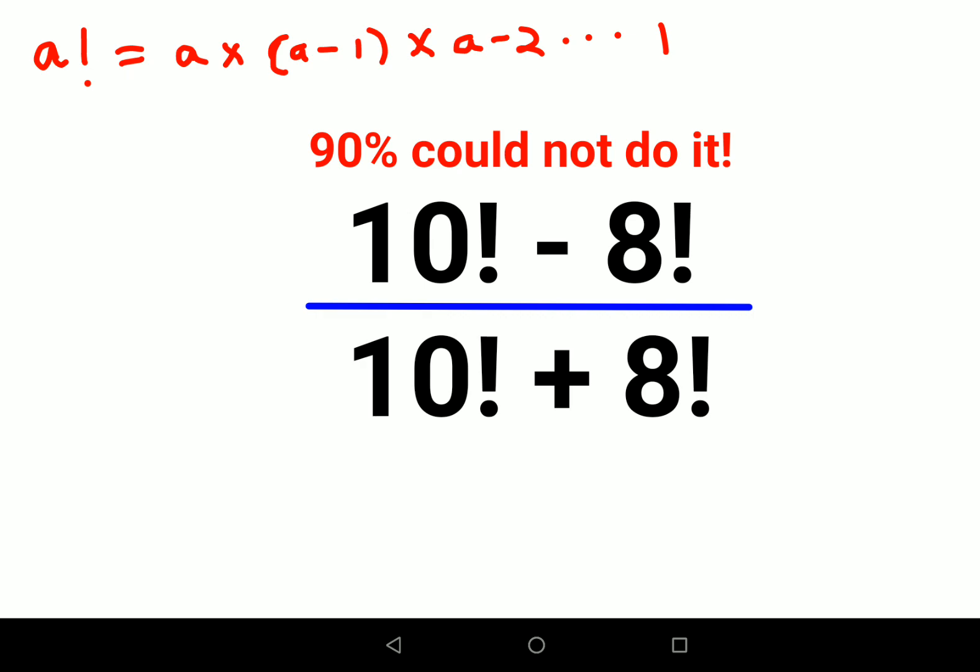Now please understand what is 10 factorial. So instead of doing all of this, let's try and look at 5 factorial and 4 factorial. 5 factorial is 5 into 4 into 3 into 2 into 1. And 4 factorial is 4 into 3 into 2 into 1.